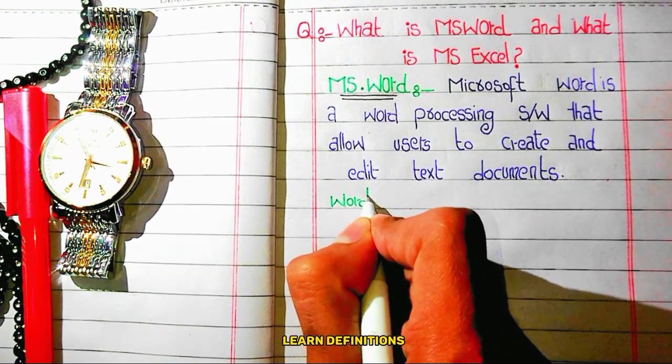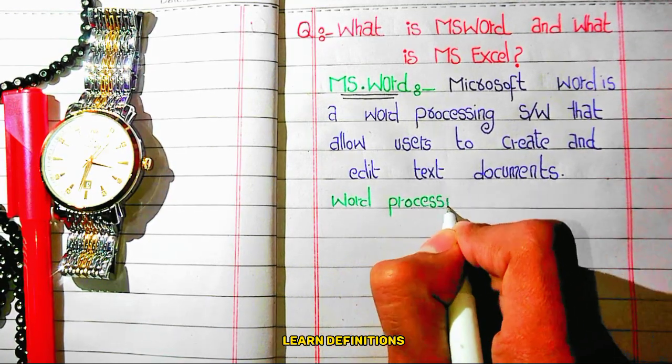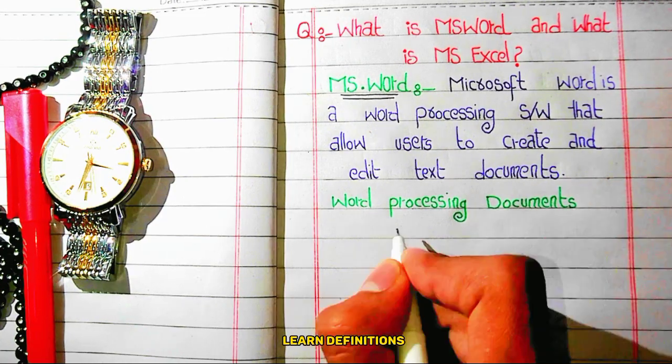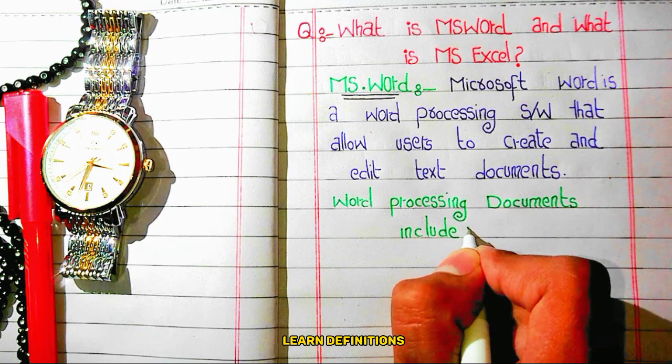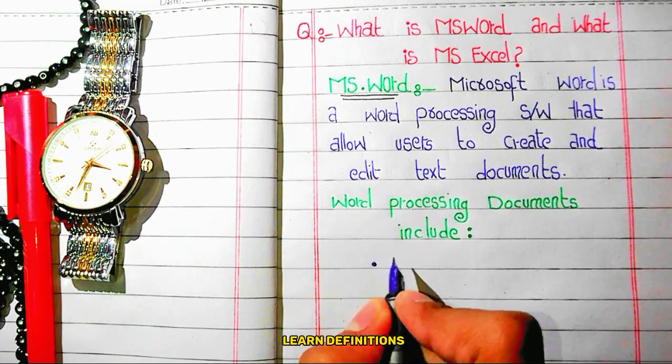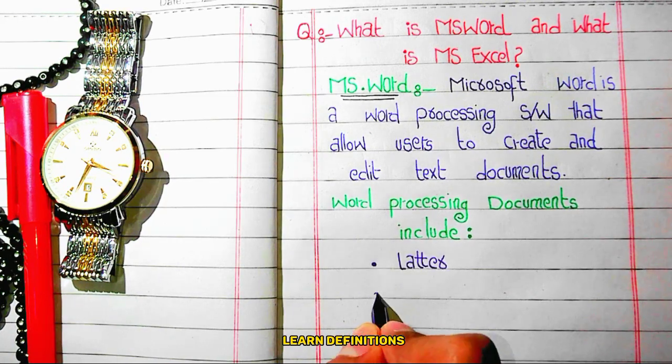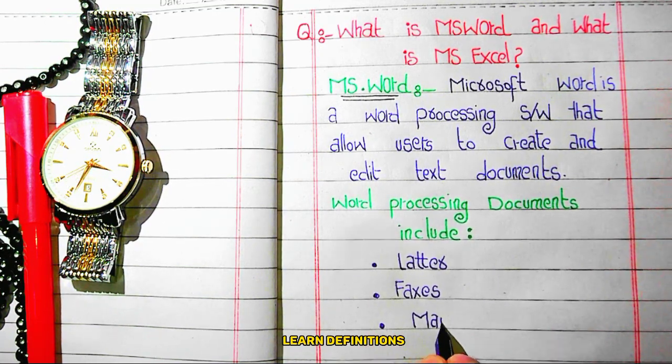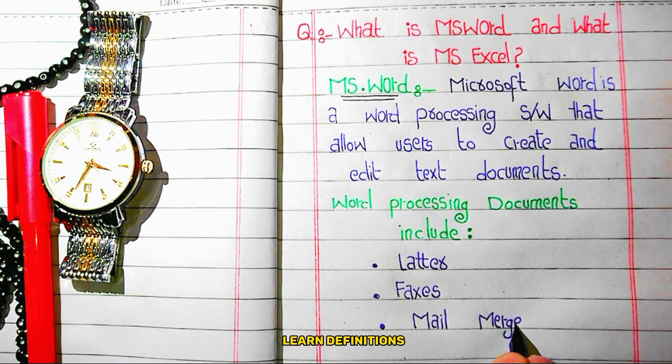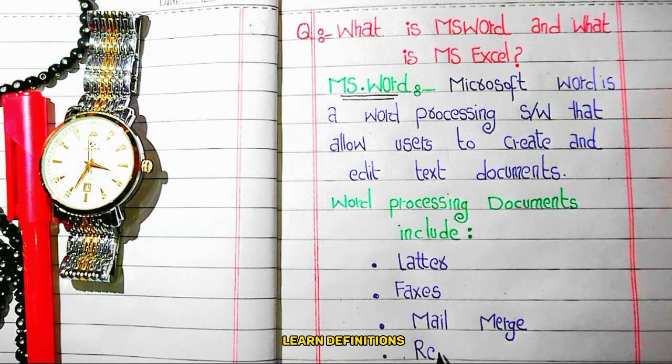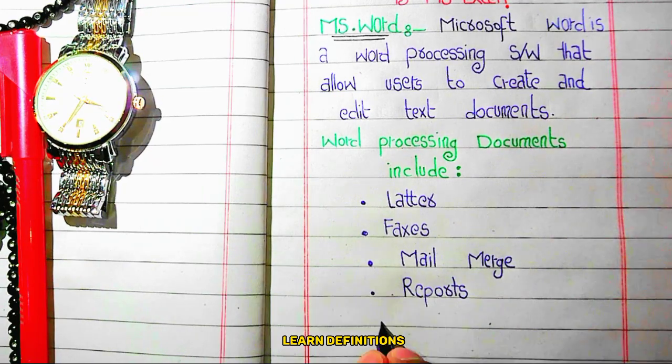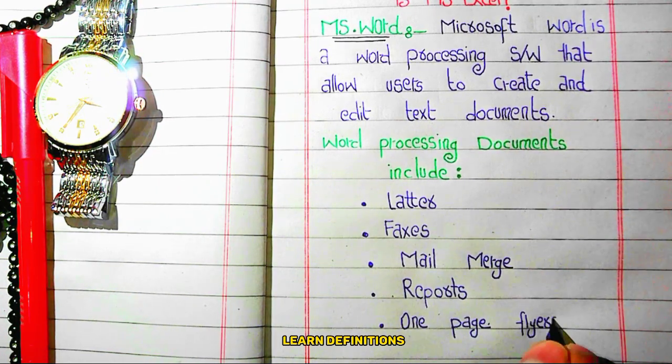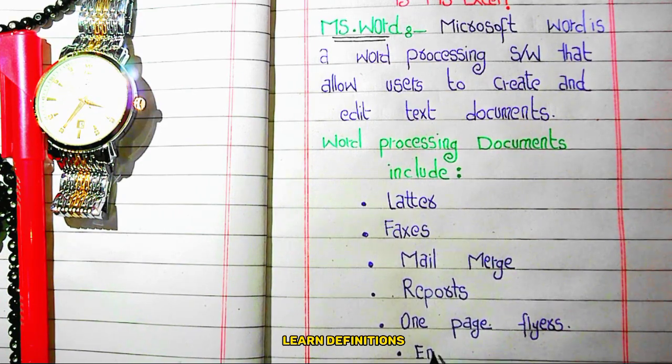Word processing documents include number one letters, number two faxes, number three mail merge, number four reports, number five one page flyers, and number six email.